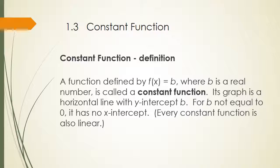A function defined by f of x equals b, where b is a real number, is called a constant function. Its graph is a horizontal line with y-intercept b. If b is not equal to zero, there is no x-intercept. If b equals zero, every number is an x-intercept. Every constant function is linear.